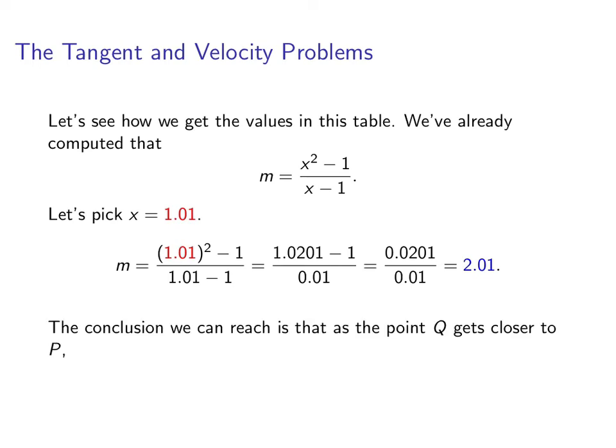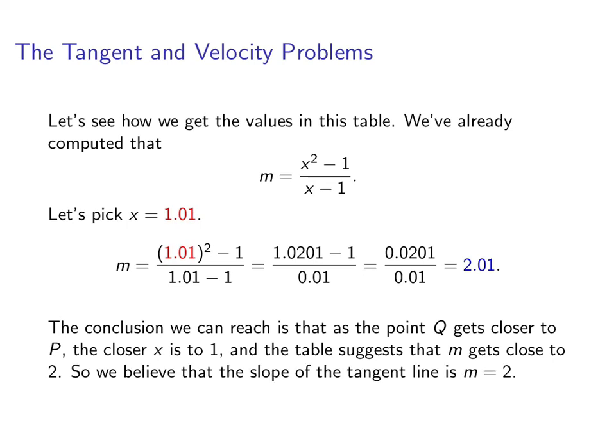Now we can come to a conclusion about what happens when Q gets closer to P. That is, the closer that x gets to 1, that table is suggesting that the slope is getting close to 2. So we're going to believe that the slope of the tangent line is m equals 2.